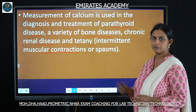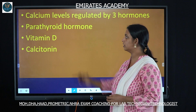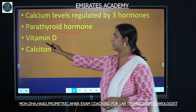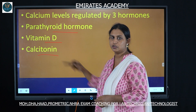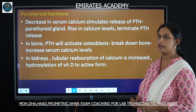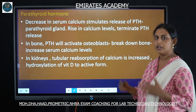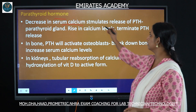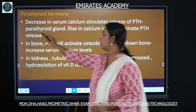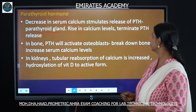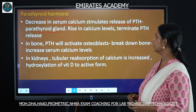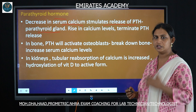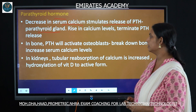Calcium levels in the body are regulated by three hormones: parathyroid hormone, vitamin D, and calcitonin. Decreased serum calcium levels will stimulate the release of parathyroid hormone (PTH) from the parathyroid gland. Conversely, if calcium levels increase, PTH secretion will be stopped.